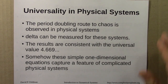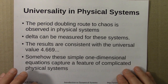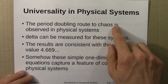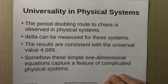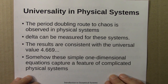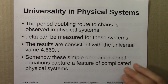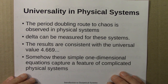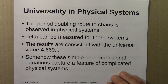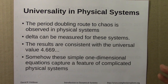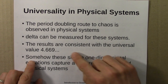It turns out that we can also see universality in physical systems. The period doubling route is observed in physical systems. There, the parameter might be something like flow rate, or the temperature difference in a convection roll experiment — the difference between temperature at the top and the bottom. So instead of having the r that we adjust on a computer, we would have something else that we adjust in a real physical experiment. We can define delta and measure it the same way for these systems, and the results are consistent with this universal value.